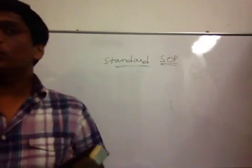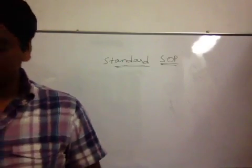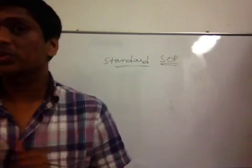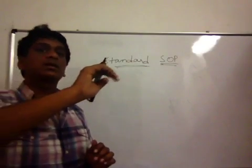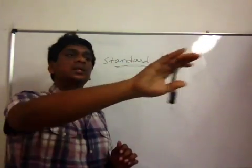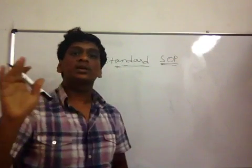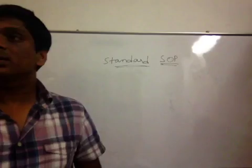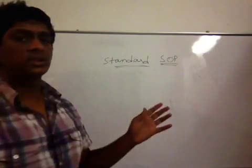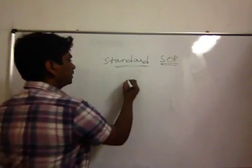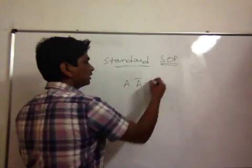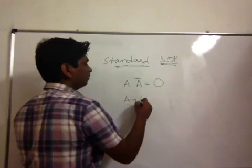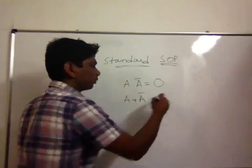So, cutting down to basic binary logic, let us see what it is from scratch. The boolean logics, just the A into A complement and A plus A complement, you remember that, right? So, just let me revise. One is A into A complement is 0 and A plus A complement is 1.